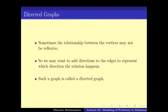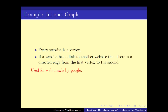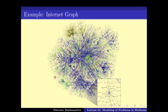We can also have a directed graph when the relationship is not symmetric. In that case, the edges can have a direction, and we call it a directed graph. A typical example of a directed graph is the internet graph, where every website is a vertex and if there is a link from one website to another, it is a directed edge. We get the internet graph, which is used a lot by various search engines.